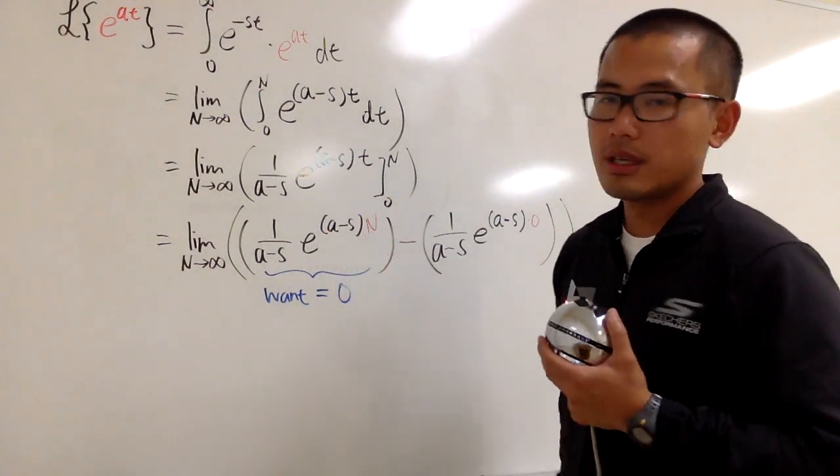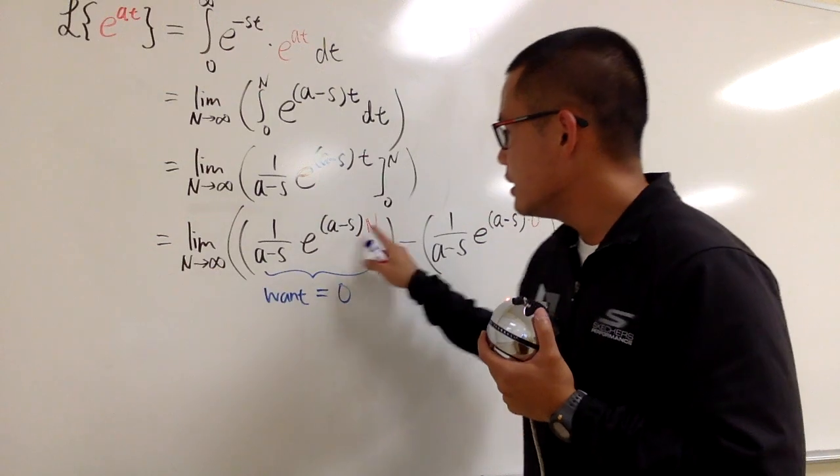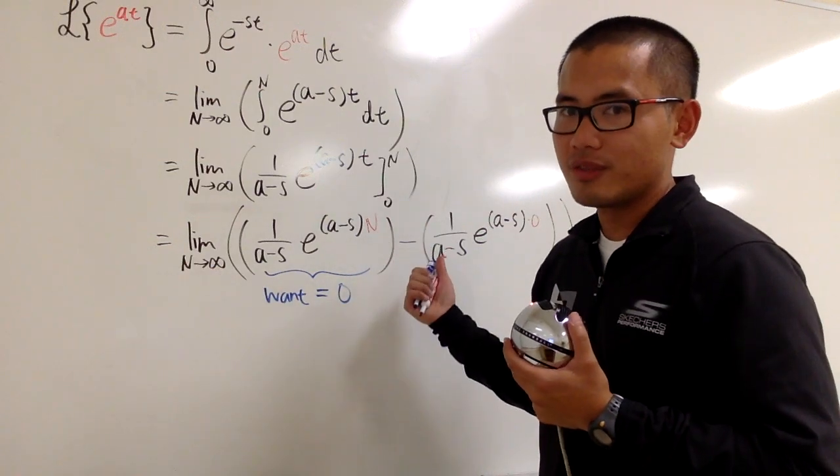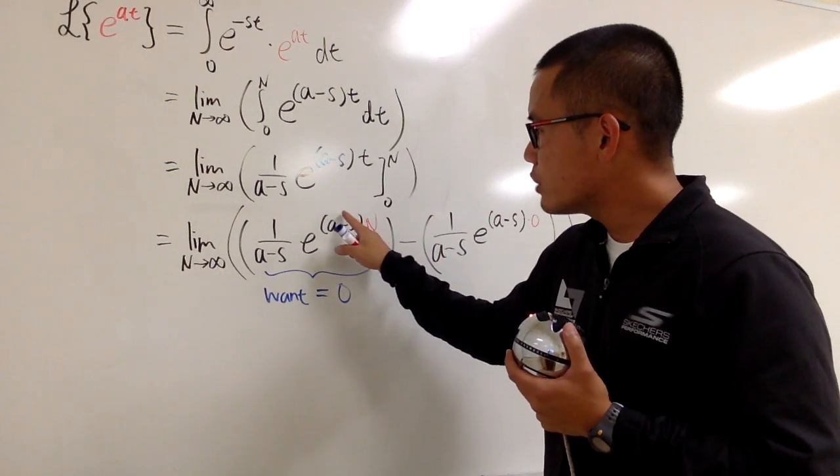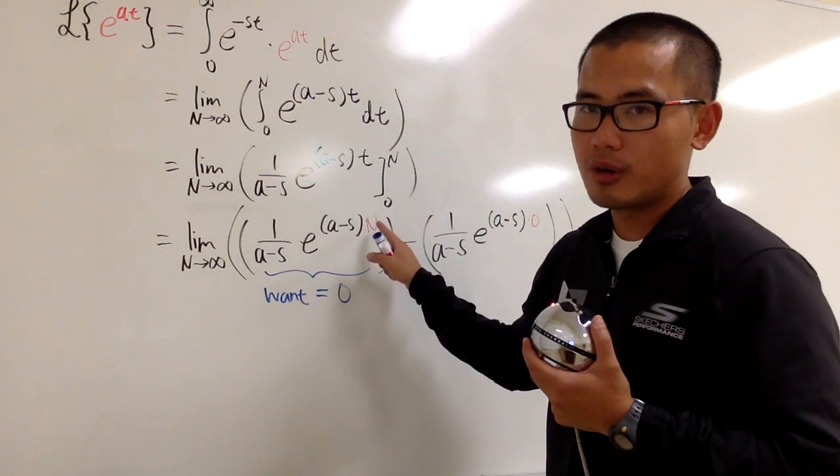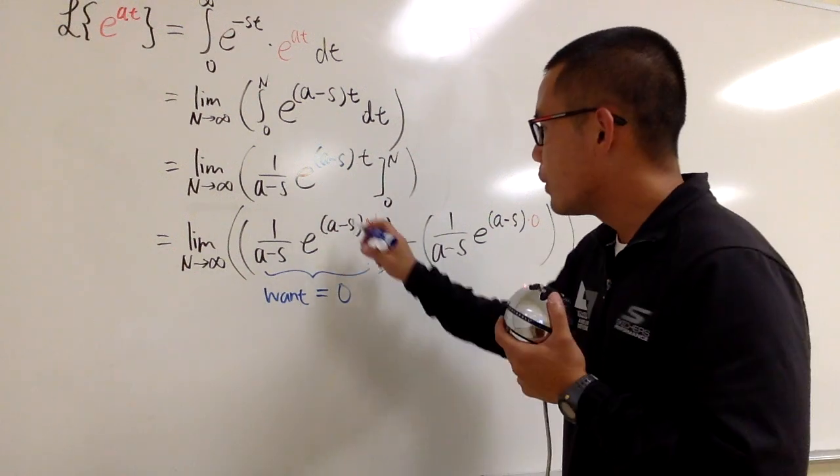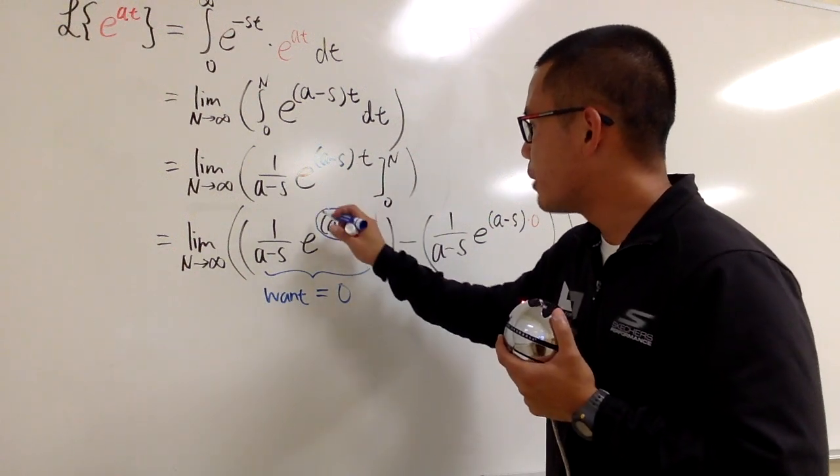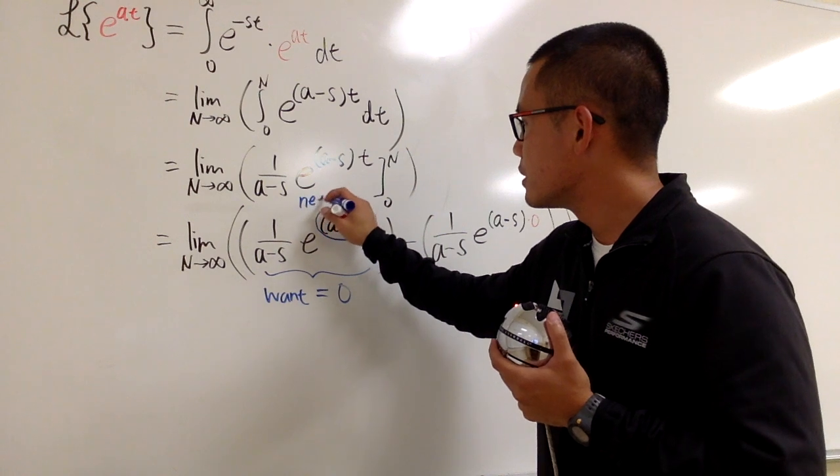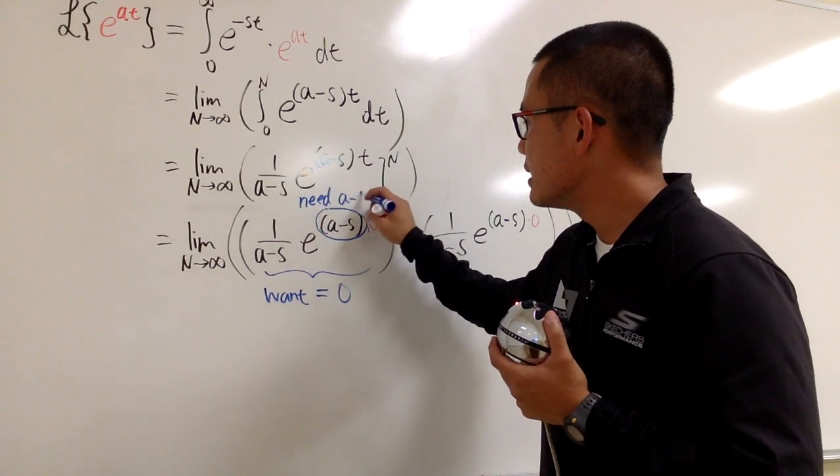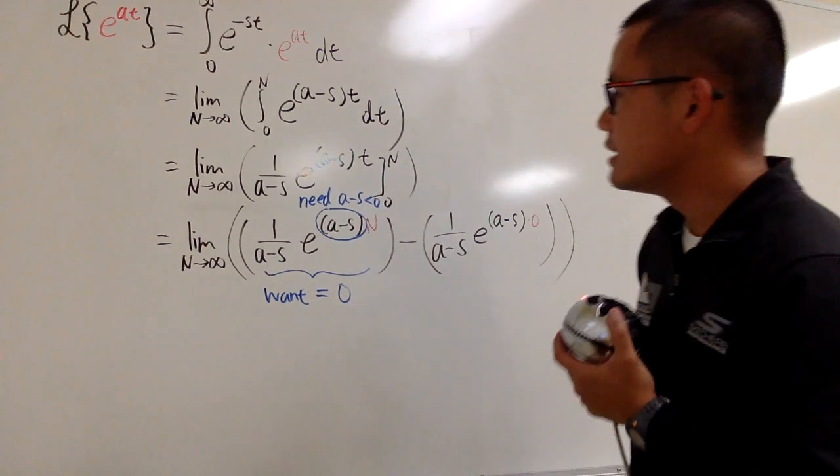Let's look at the exponent. You know n is infinity, it's going to infinity. I want to make sure that I have a negative infinity right here. So that means, I want to make sure that this part, we need to have a minus s to be less than 0.